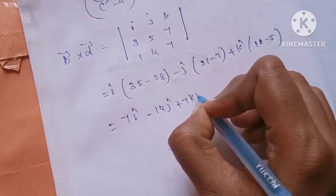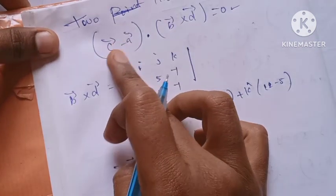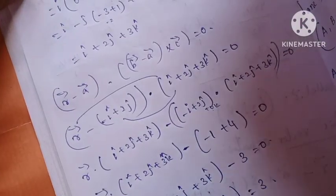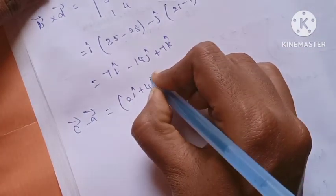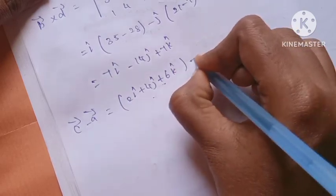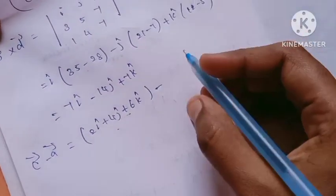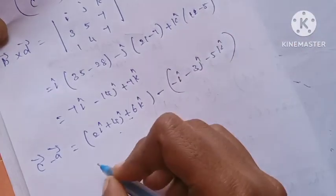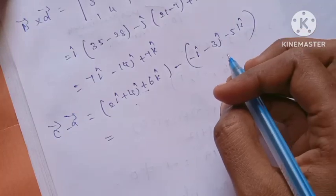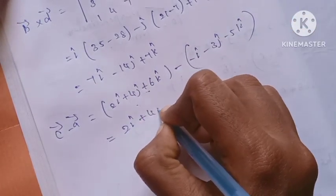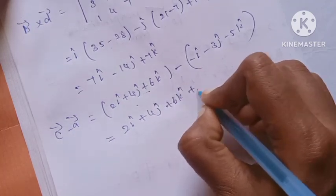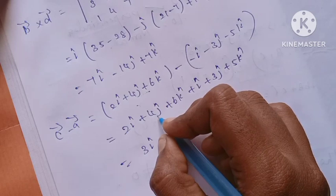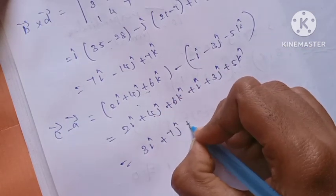Now computing C minus A vector. C vector is 2i, 4j, 6k and A vector is i minus 3j minus 5k, so minus of minus gives plus. C minus A equals 2i plus 4j plus 6k plus i plus 3j plus 5k, which equals 3i plus 7j plus 11k.